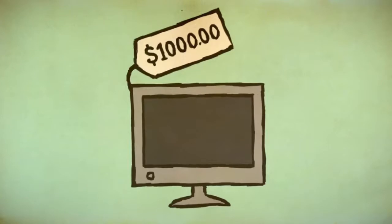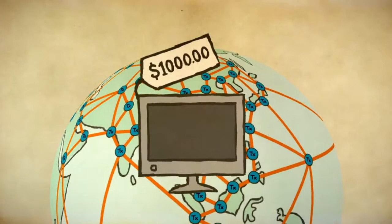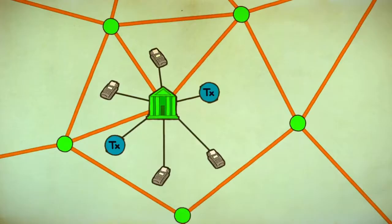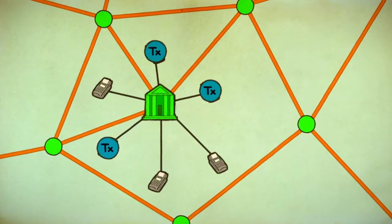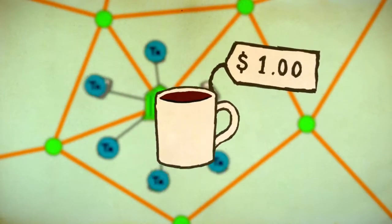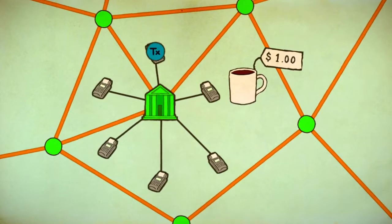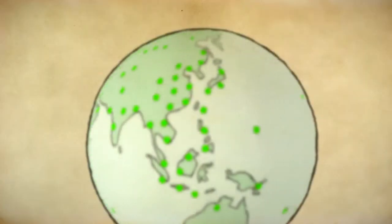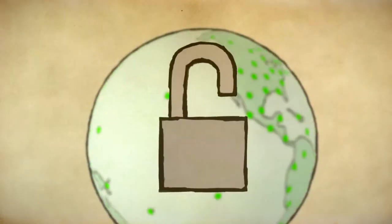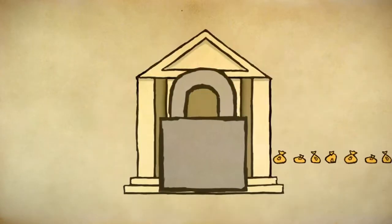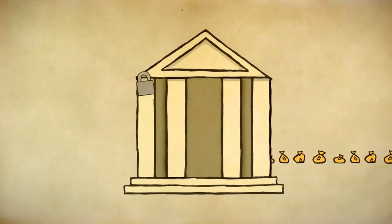You'll still use the blockchain for large transactions. Small exchanges will be handled by payment processors, which means small purchases like your morning coffee don't clog the whole system up. We can use the very same cryptography that makes Bitcoin secure to audit off-chain payment systems, as well as effectively make it impossible to get away with fraud or theft.